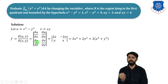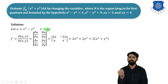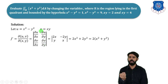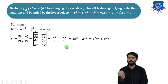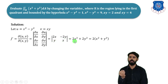Next, ∂v/∂x: since v = xy and y is constant, this equals y. Then ∂v/∂y: with x constant, this equals x. Taking the determinant: (2x)(x) − (−2y)(y) = 2x² + 2y². Factoring out 2 gives J' = 2(x² + y²).